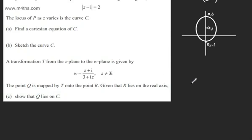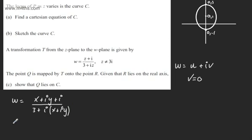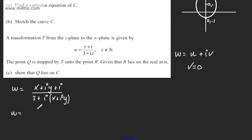Since R lies on the real axis, let's express w in terms of u and iv, so w equals u plus iv. If R is on the real axis, then v must equal 0. I'm going to focus on the fraction and realize the denominator. Writing w with z expressed as x plus iy, we get x plus iy plus i in the numerator, giving us x plus i times (y plus 1).